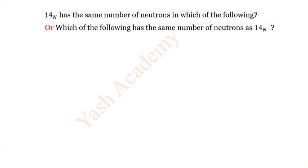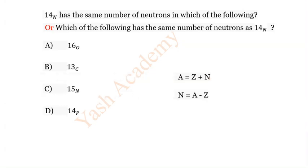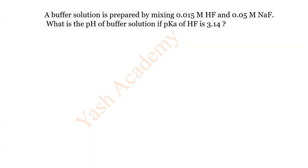Question 20: Nitrogen-14 has the same number of neutrons as which of the following? Options: A) Oxygen-16, B) Carbon-13, C) Nitrogen-15, D) Phosphorus-14. Using the neutron count formula, the correct answer is B) Carbon-13.